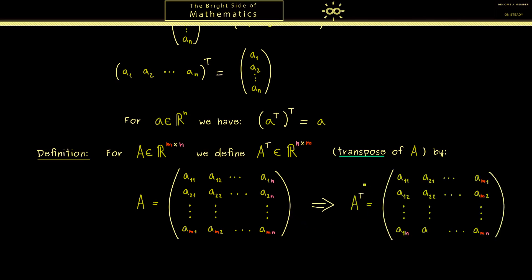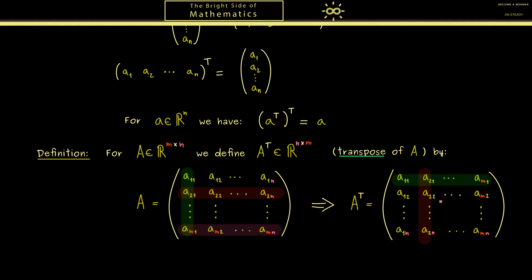Hence A transpose now has to look like this. So we see for example that this first column here is now this row in A transpose. Or for another example, this second row here in A is now the second column in A transpose. And with this you should see, this is exactly what we mean when we say that we reflect the picture.